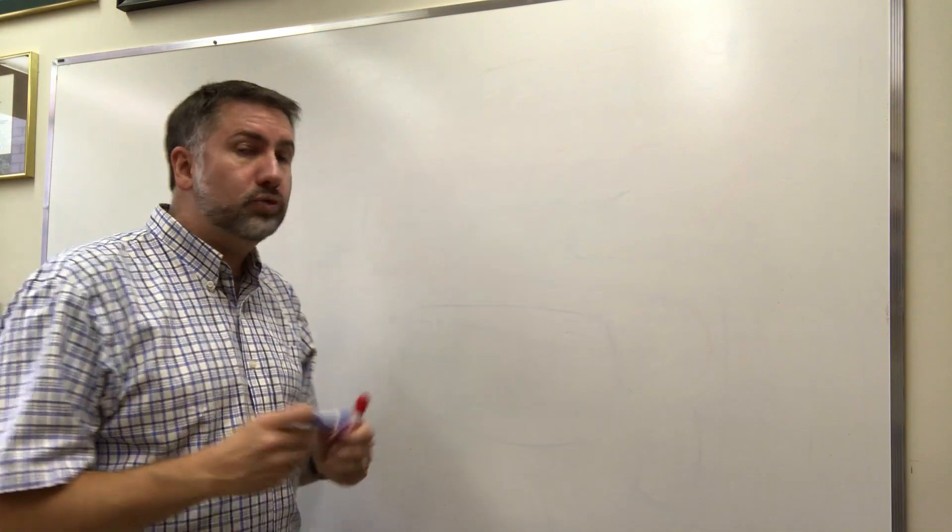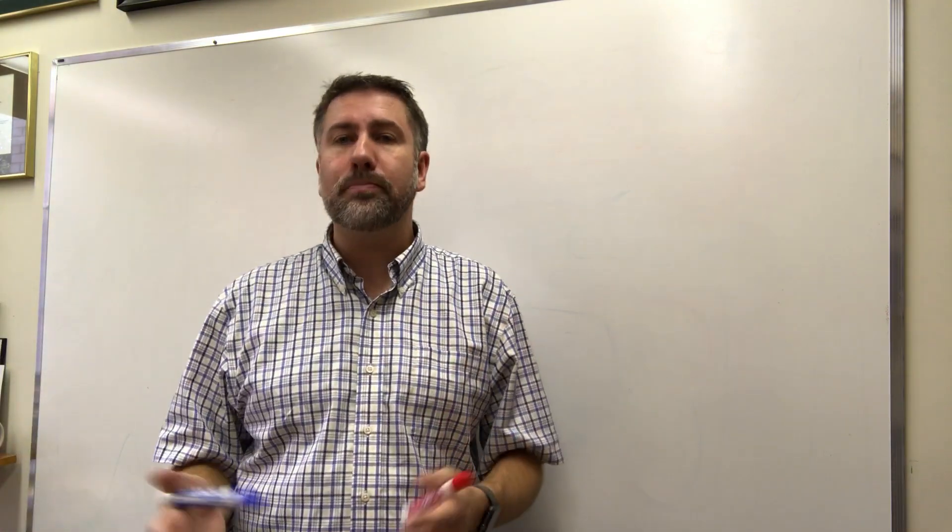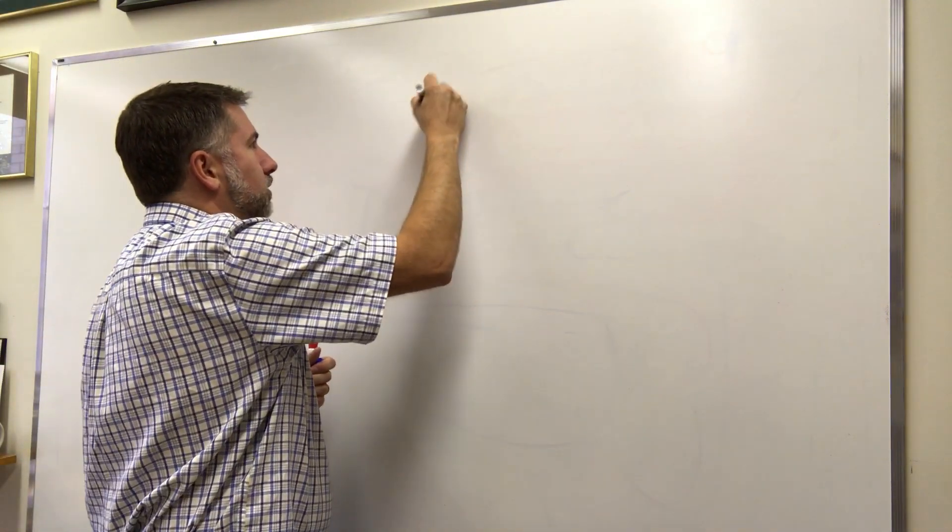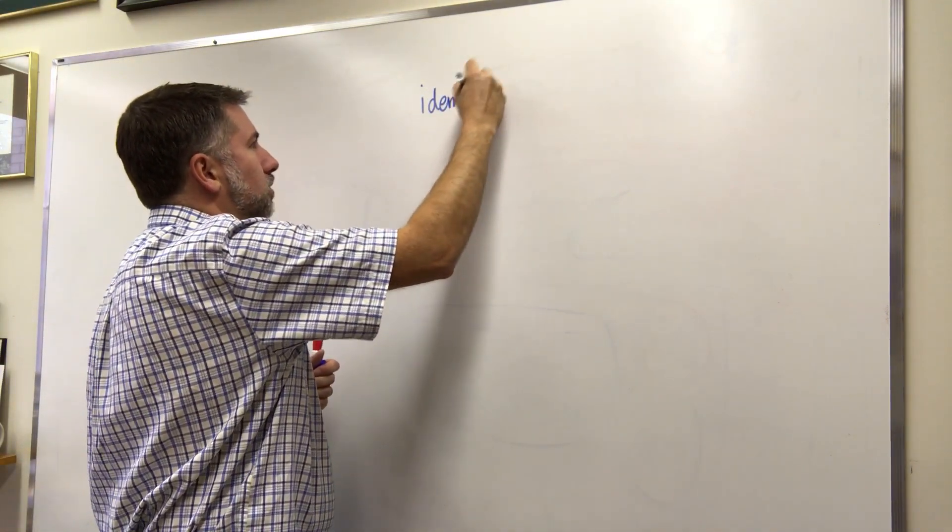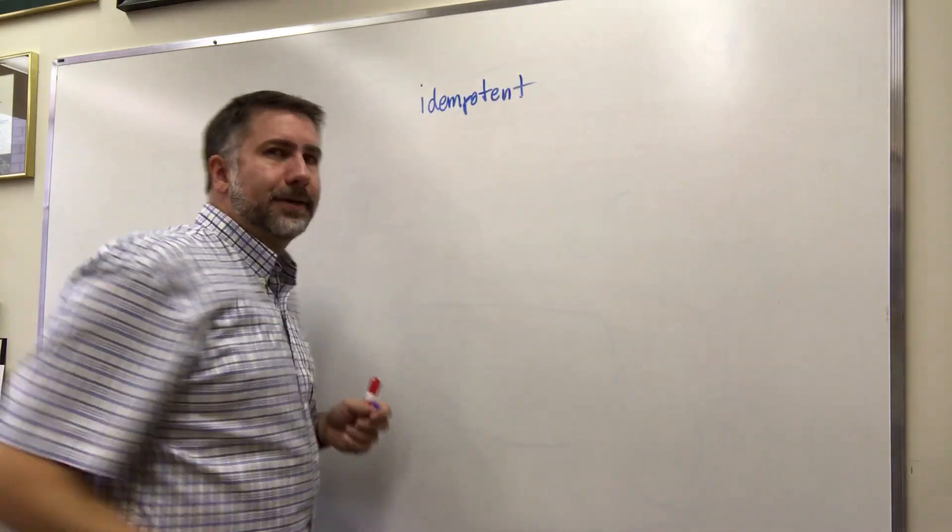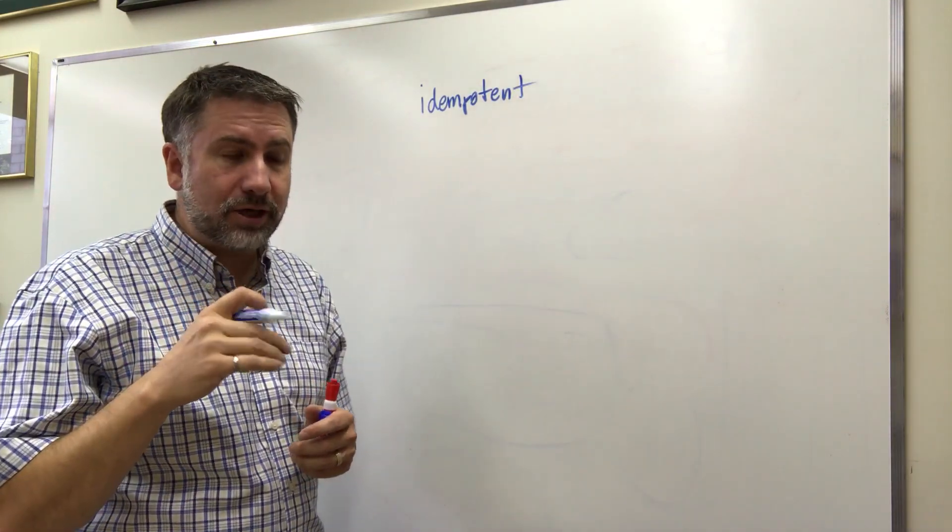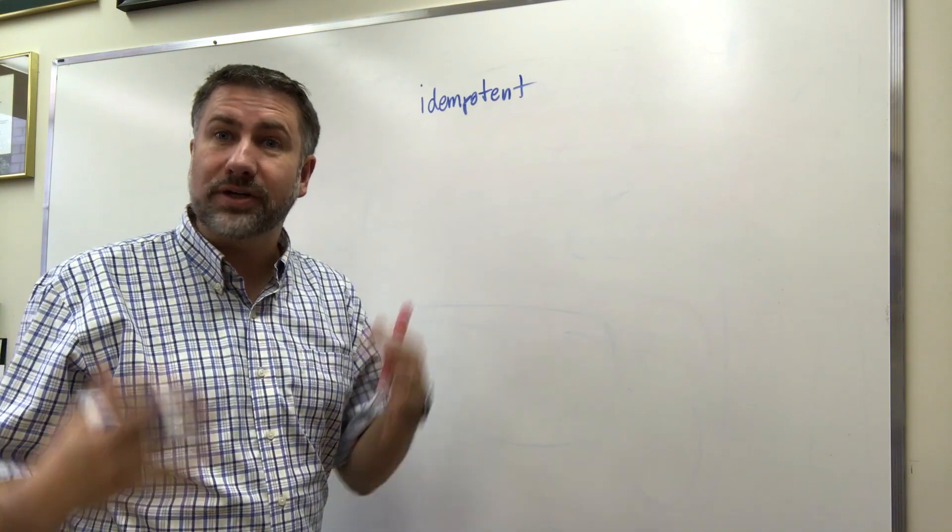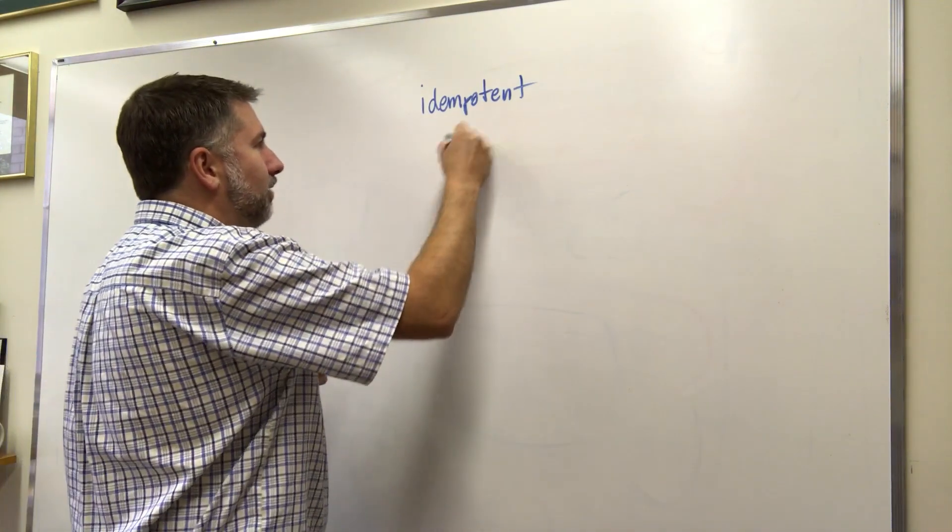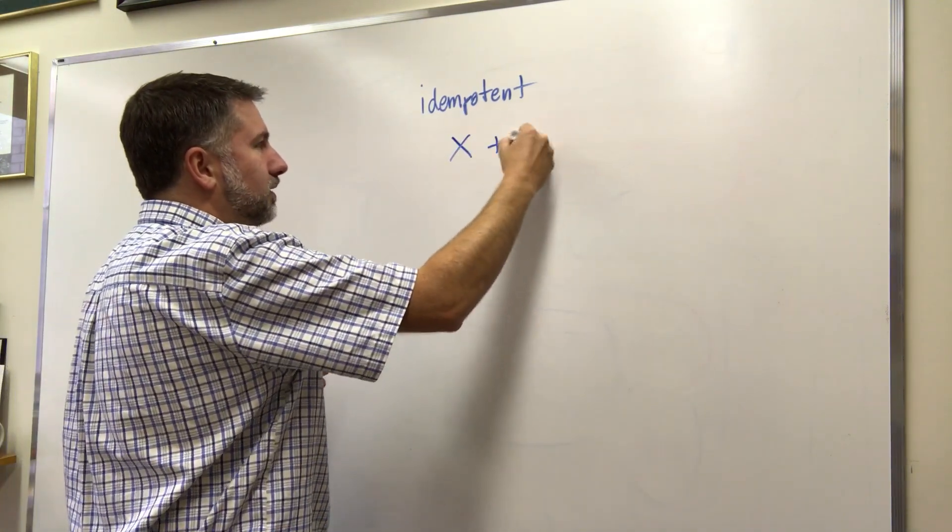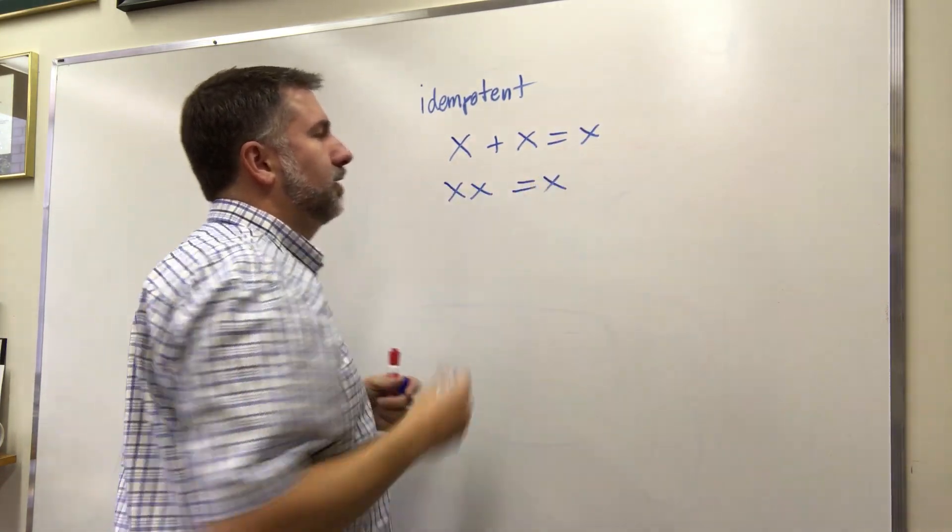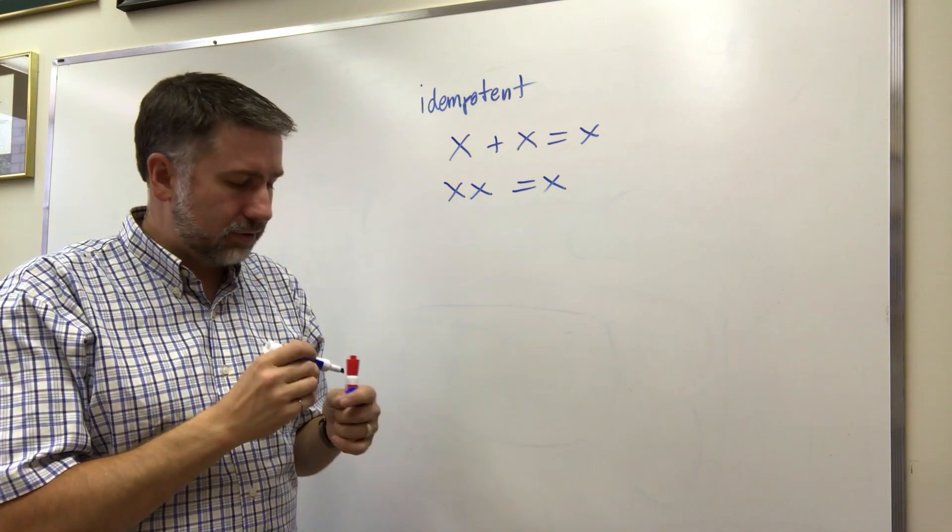There are a couple new ones that I want to show you that are special for binary logic that don't apply in traditional logic. One of them is called idempotent. Idempotent simply means that if you operate on a value you get that value back again, and that means X or X equals X, X and X equals X.